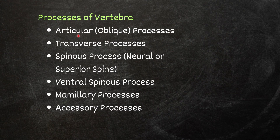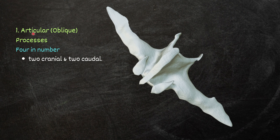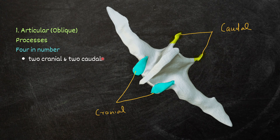The processes of vertebrae include articular or oblique processes, transverse processes, spinous process, ventral spinous process, mammillary process, and accessory process. The articular or oblique processes are four in number — two on the cranial side and two on the caudal side.